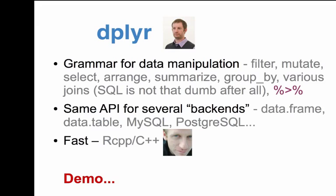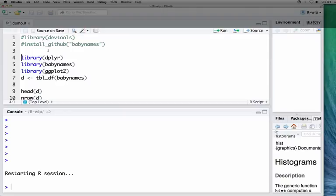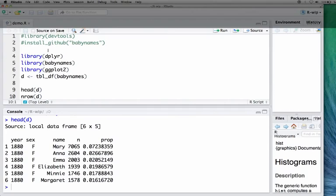Hadley created this babynames table, this babynames package. I'm just gonna use this. This data set has the data from the Social Security Administration. It has number of births and names per year, male, female. The prop is the proportion of the names that were given. This data set has about almost two million rows.